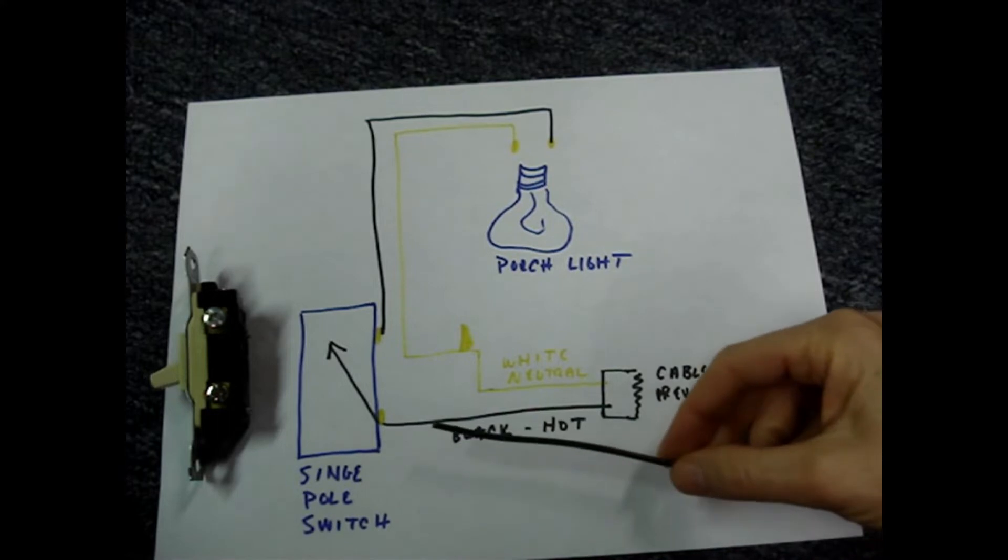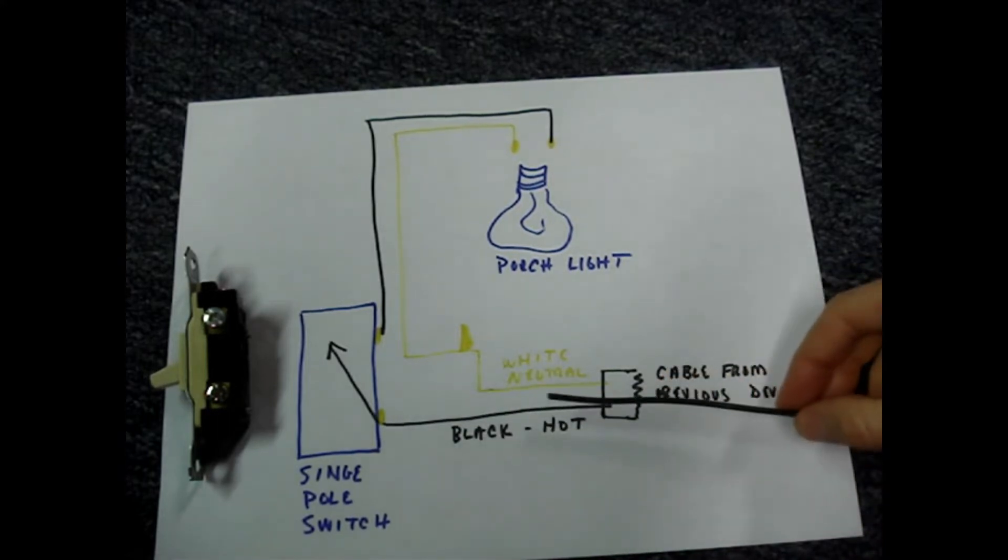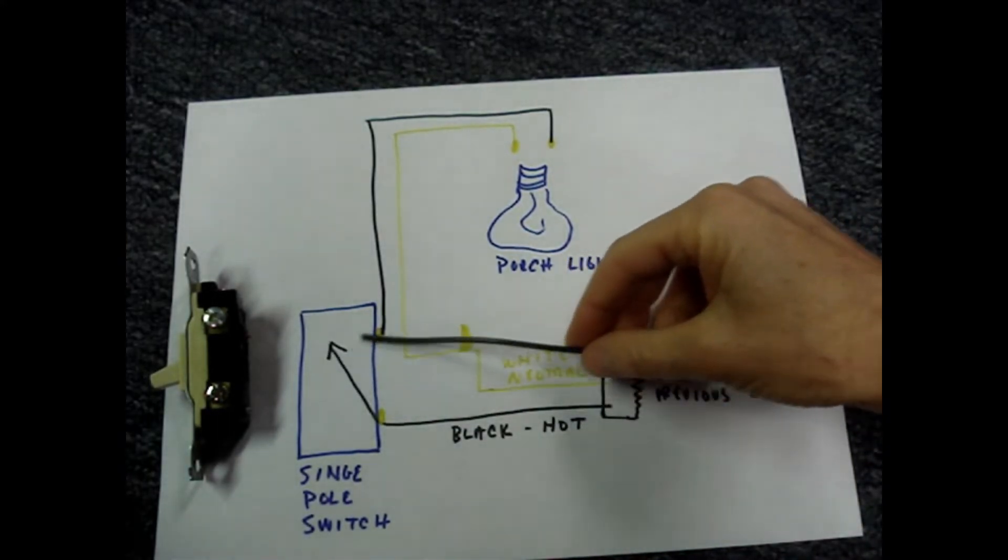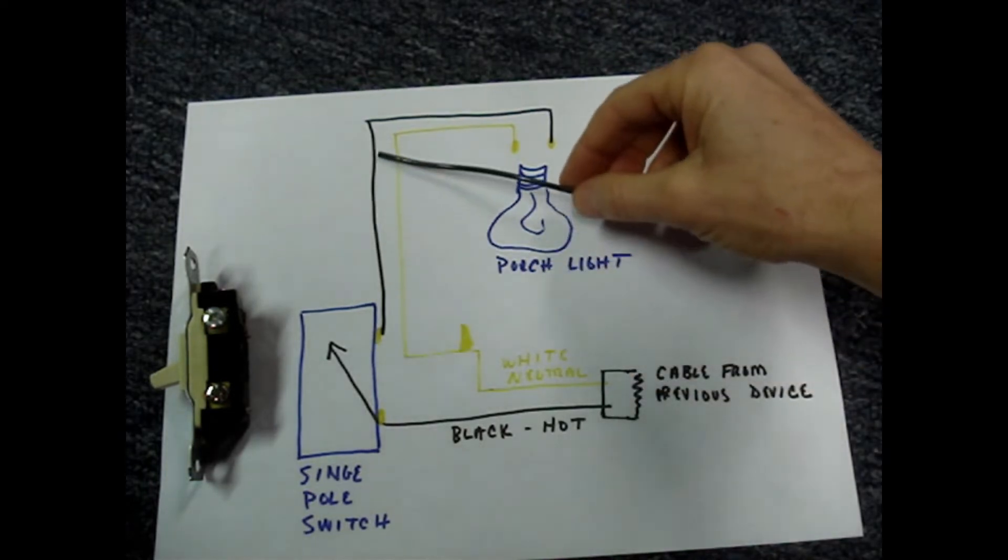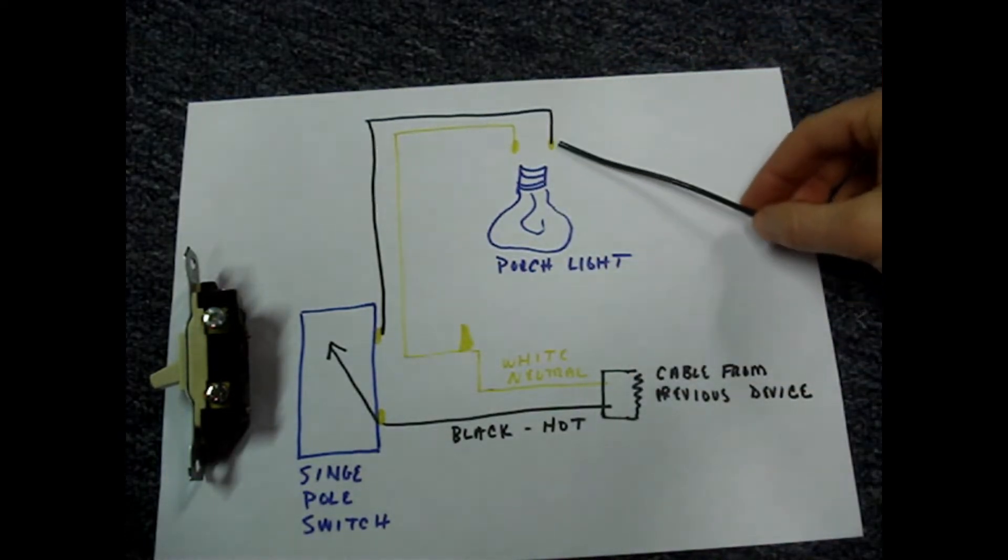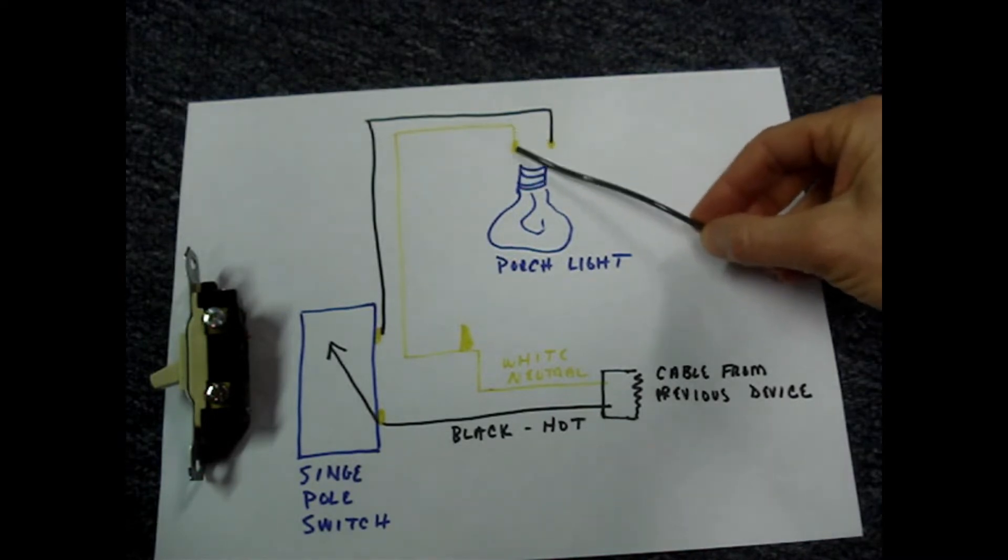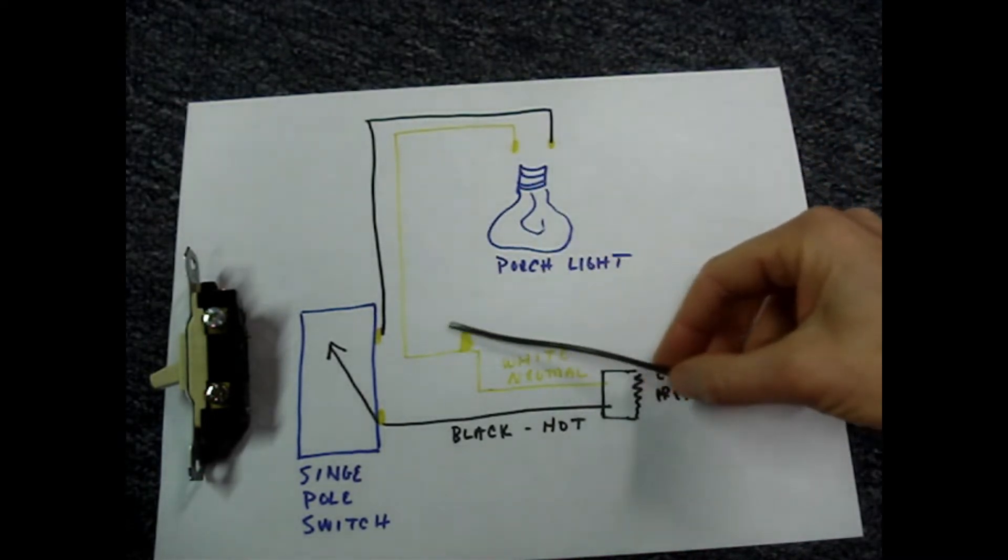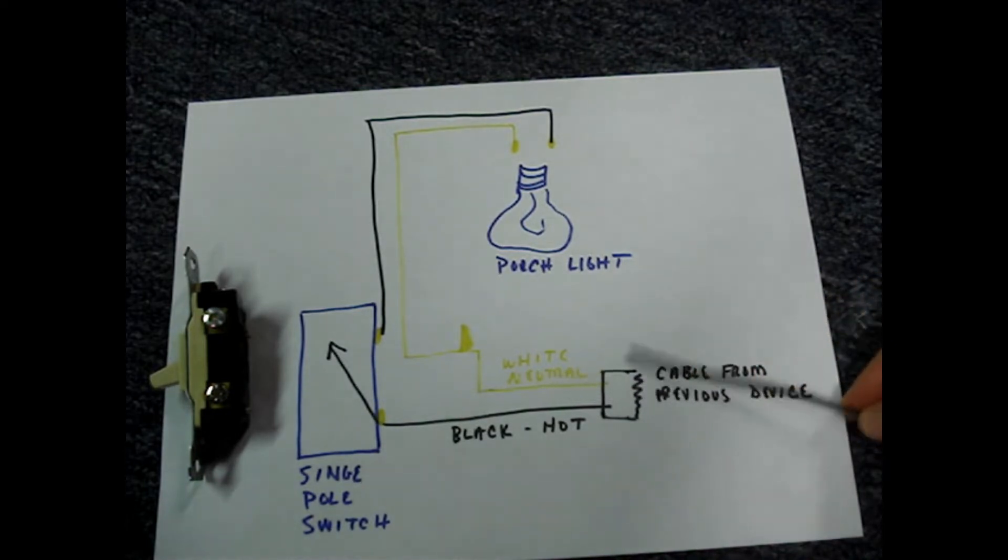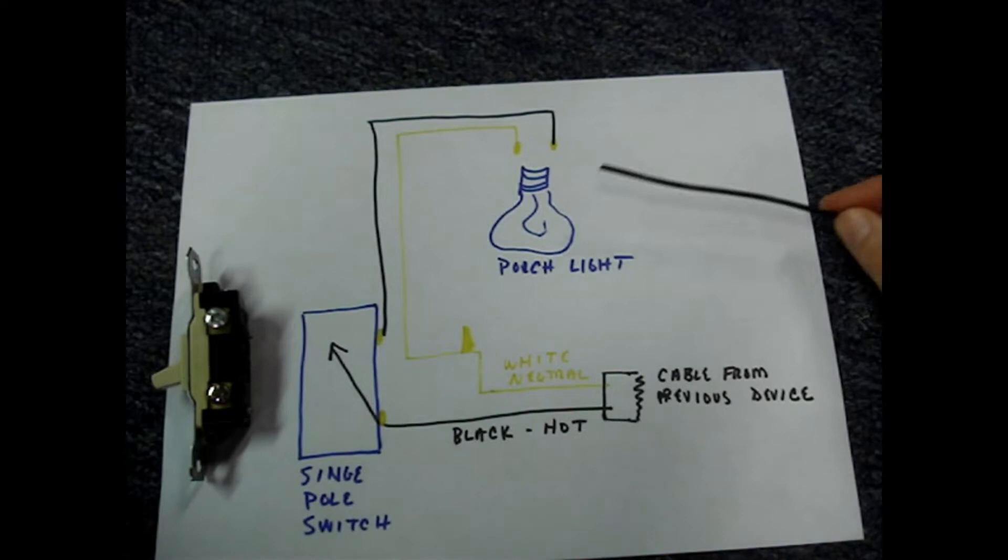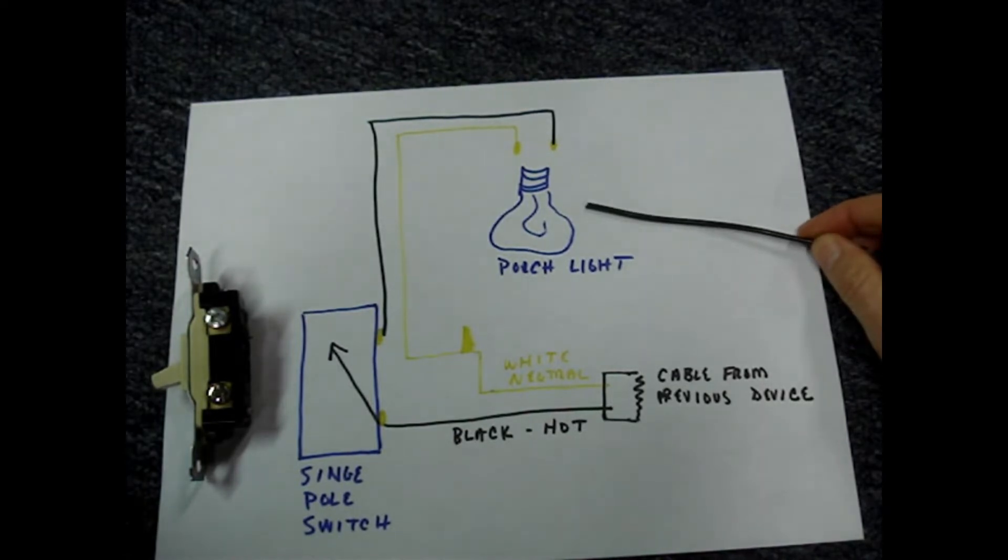The hot is always switched, so when the switch is closed, it sends the hot wire to the light and then completes the circuit back to the power source. For this circuit to work, you always need both a hot and a neutral.